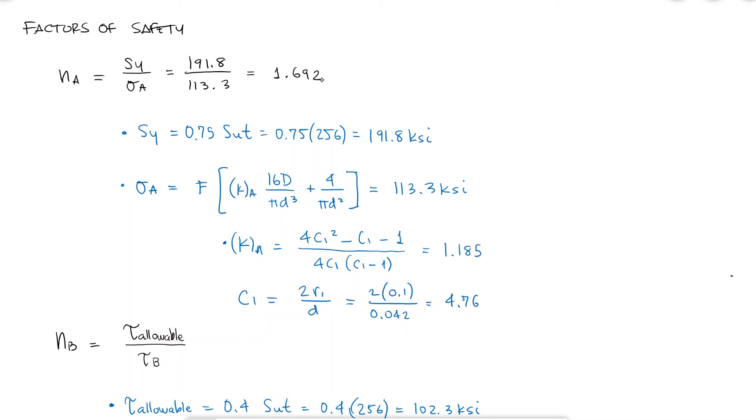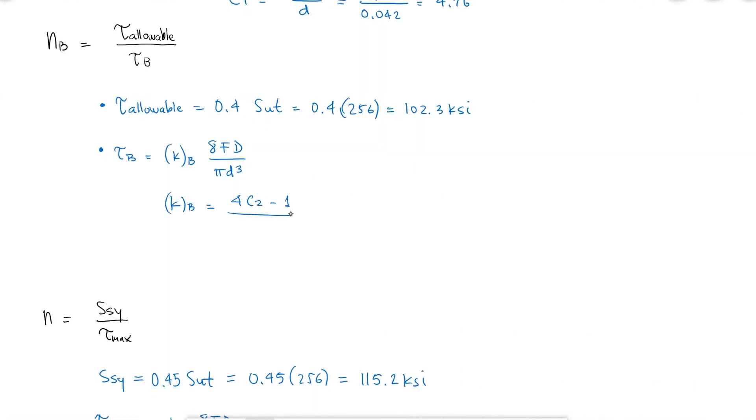For the shearing stress at the end hook, I will need the correction factor KB, which depends on C2, which in turn depends on the hook radius R2. With that hook radius of 0.08 inches, I find C2, KB, and TauB, and with TauB, the factor of safety for the shearing stress at the hook end.